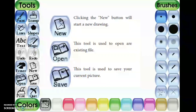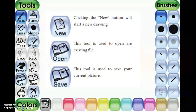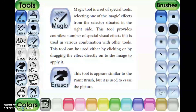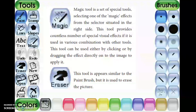The text tool is used to type text. Clicking the new button will start a new drawing. The open tool is used to open an existing file. The save tool is used to save your current picture. The print tool is used to print your current picture.